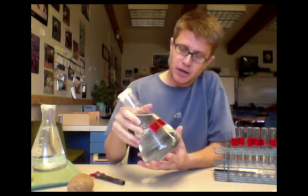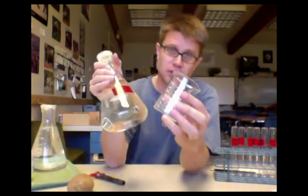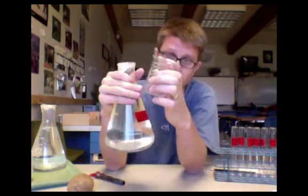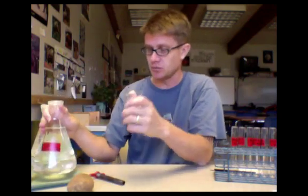It's really hard to pour out of these Erlenmeyer flasks, so what I'll do is put a little beaker in front of each one. Essentially you go from the Erlenmeyer flask to the beaker and then from the beaker into each of your test tubes.